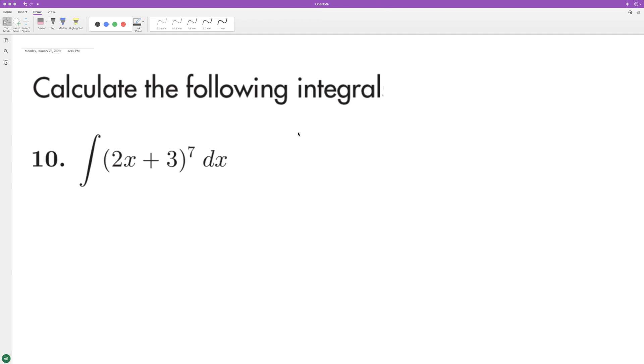For the following integral, let's use u-substitution. We'll set u equal to 2x plus 3, and du is equal to 2. So to get du equal to dx, we need to multiply du by one-half. We'll put this one-half in front of the radical or to the left of the integral sign.